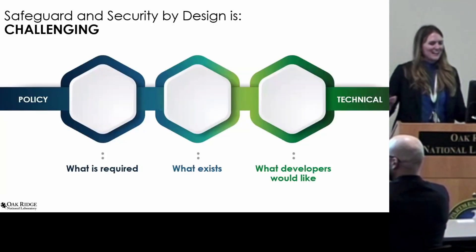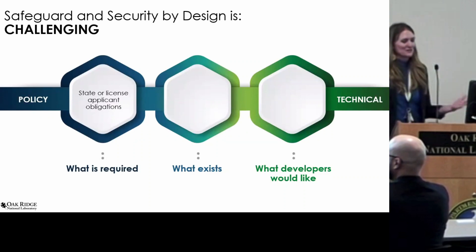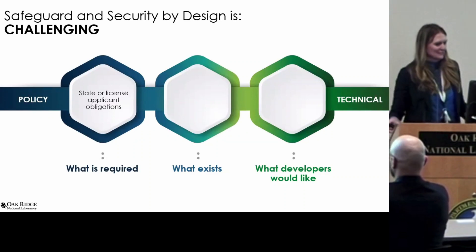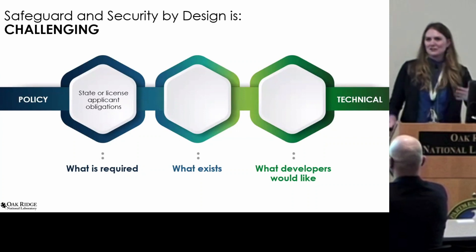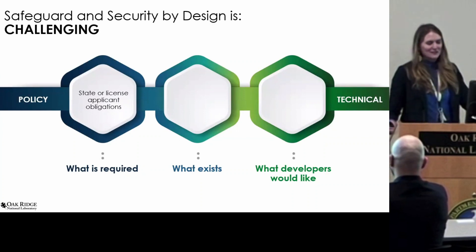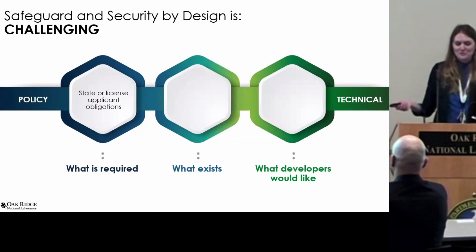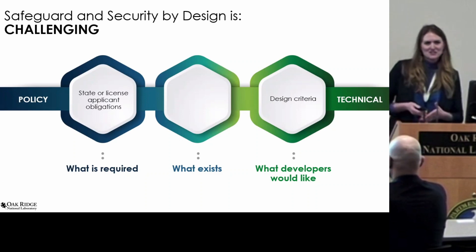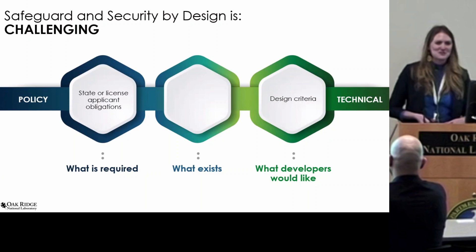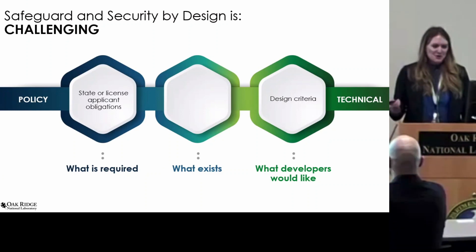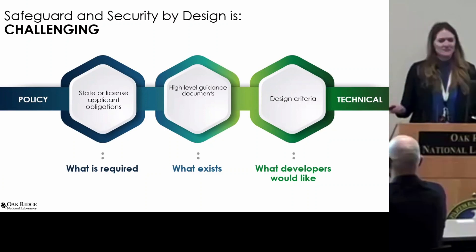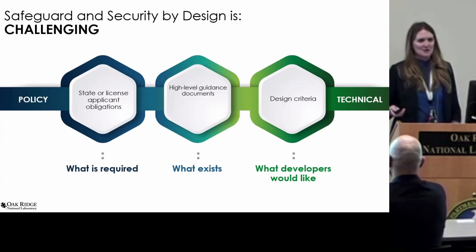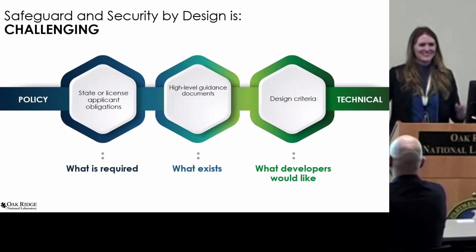The challenge here is that what's required — these state or license applicant obligations — are typically high-level, policy-based regulations. What would developers like to see? We've heard from you: design criteria, specific technical recommendations. Tell us where to put what. That's what we need to do. We're working a lot of different angles on this. What currently exists is some high-level guidance documents from both the International Atomic Energy Agency — Tracy put up a couple on screen — and we're happy to connect dots on where to get those.